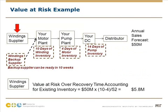For example, here's the metric value at risk. I have a little supply chain with a forecast of $50 million. There's a backup supplier that can be ready in 10 weeks, but I've got about four weeks of inventory positioned downstream. So in this example, my value at risk over recovery time accounting for existing inventory is $5.8 million.